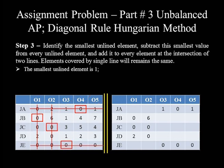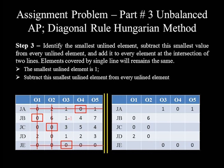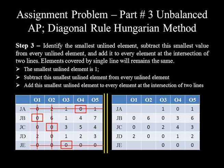The smallest unlined element is 1. Subtracting 1 from every unlined element: 1−1=0, 4−1=3, 7−1=6, 3−1=2, 5−1=4, 4−1=3, 1−1=0, 2−1=1, and 3−1=2. On the other hand, we add the smallest unlined element to every element at the intersection of horizontal and vertical lines. The 4 straight lines intersect at 4 points: 0+1=1, 2+1=3, 0+1=1, and 0+1=1.